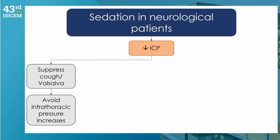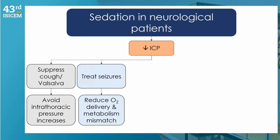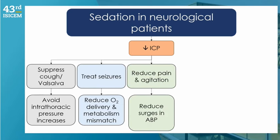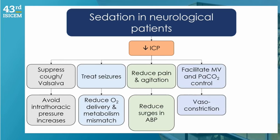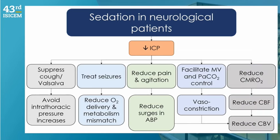For neuroprotection with respect to intracranial hypertension, we try to avoid coughing and increases in intrathoracic pressure causing back pressure in CVP, which at the sagittal sinus and the Starling resistor may increase ICP. We also treat seizures, reduce metabolic demand, and control pain and agitation. Blood pressure surges are particularly relevant in patients who have lost autoregulation and are pressure-passive, potentially increasing cerebral blood volume and ICP.